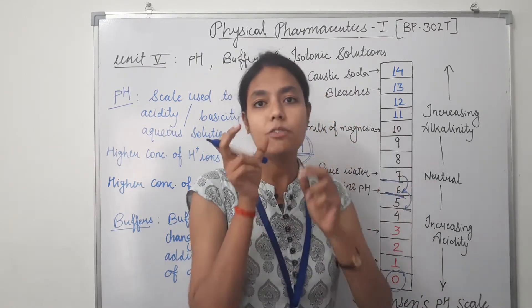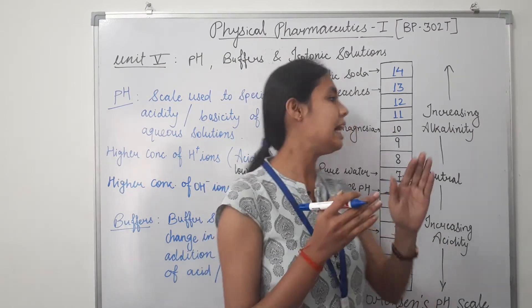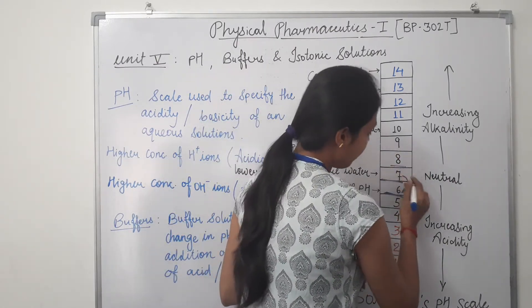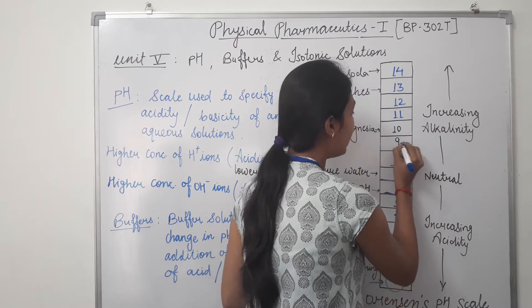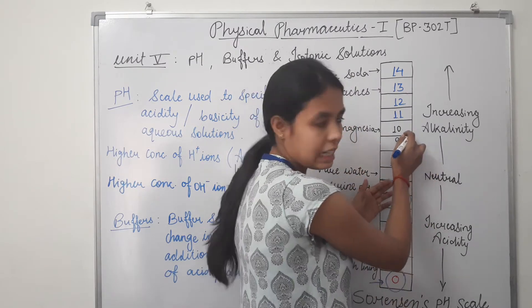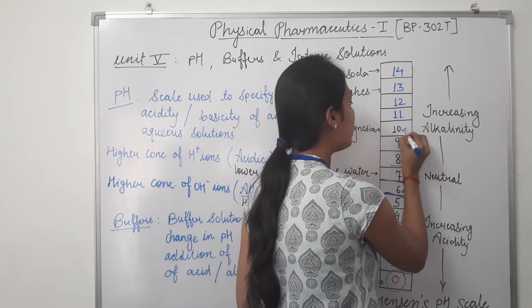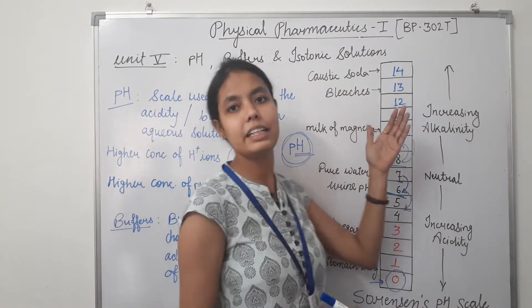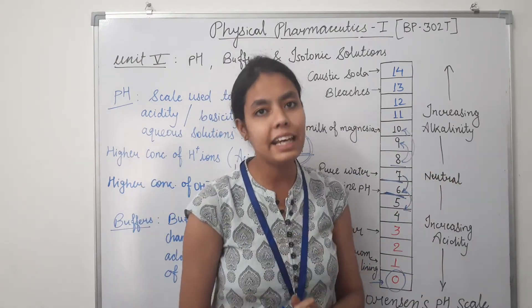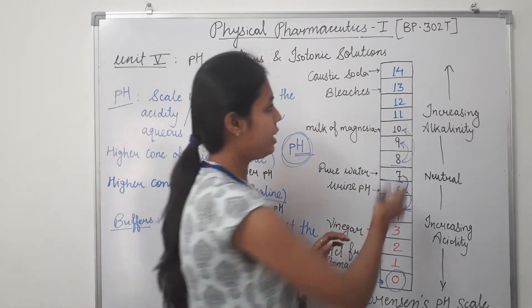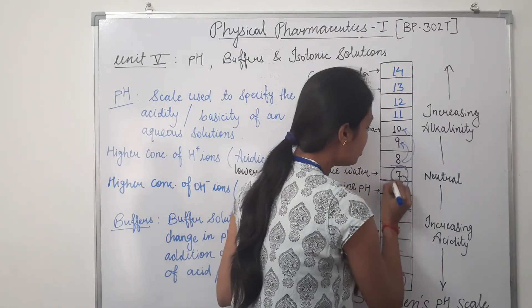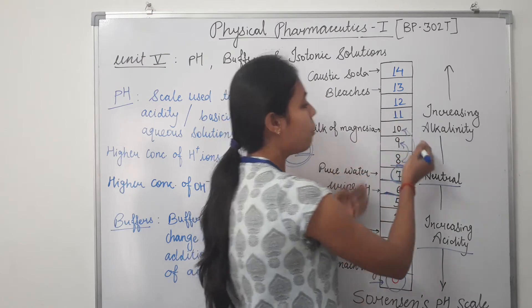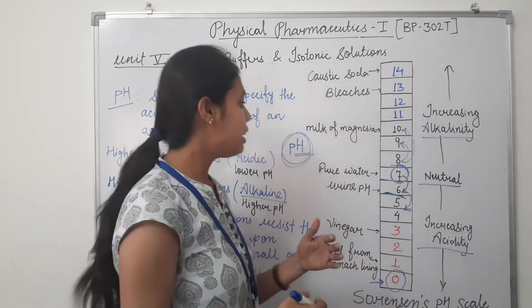For example, pH 10 is 10 times more alkaline than pH 9, and 100 times more alkaline than pH 8. Likewise, moving upward, it is 10 times more alkaline with each step. This describes the alkalinity or acidity levels on Sorensen's pH scale. On this scale, pH 7 denotes neutral pH. As we move downwards, acidity increases; as we move upwards, alkalinity increases.